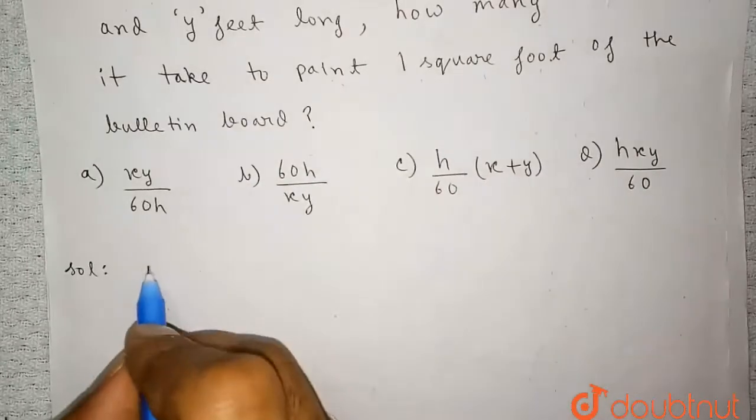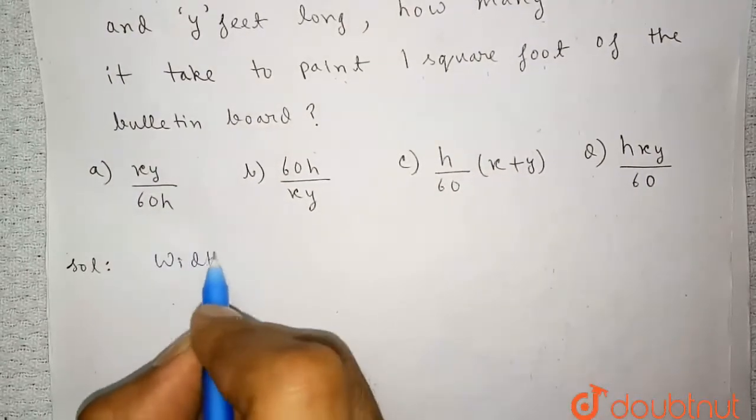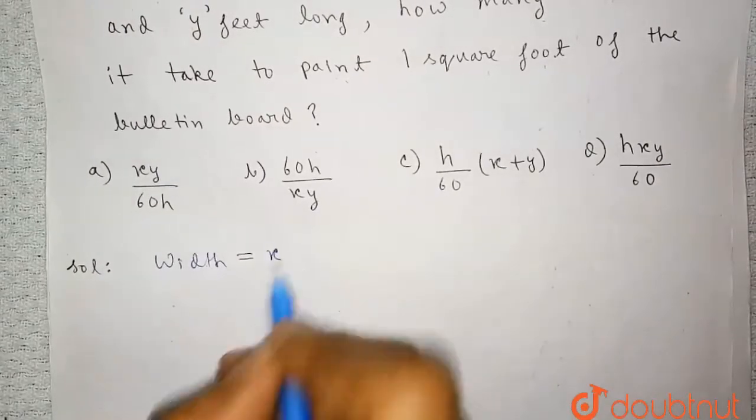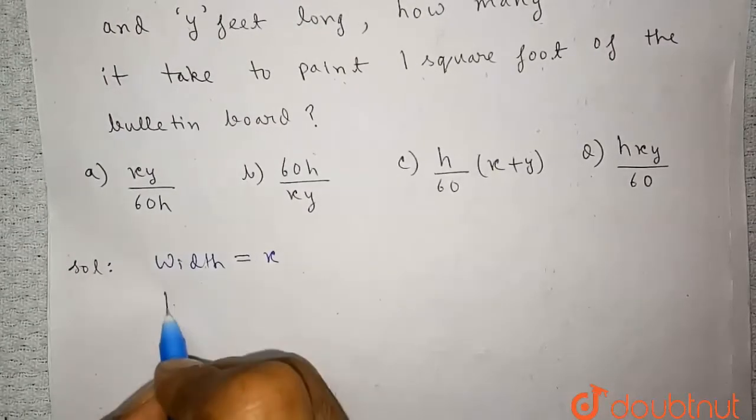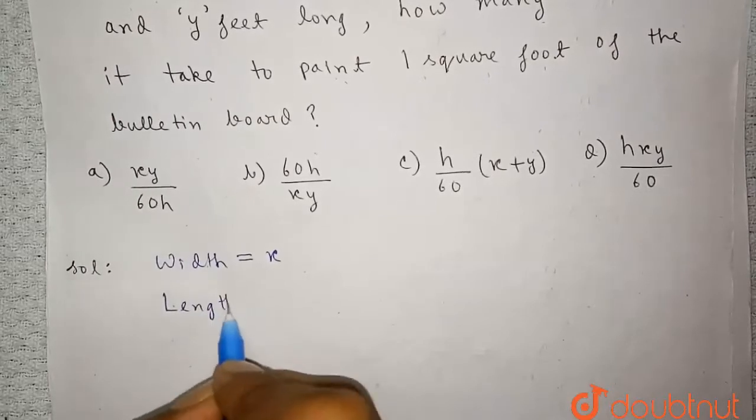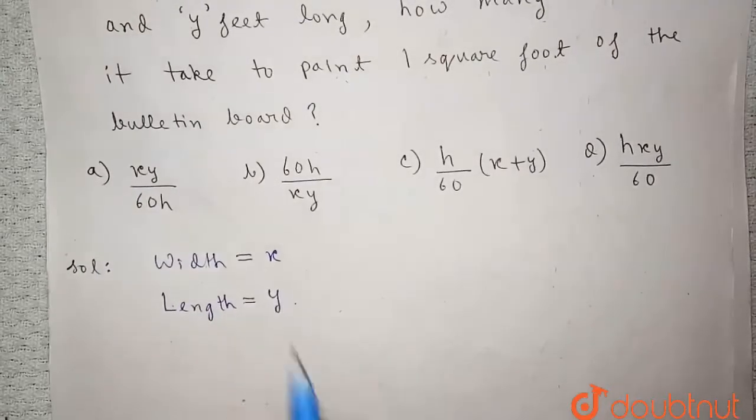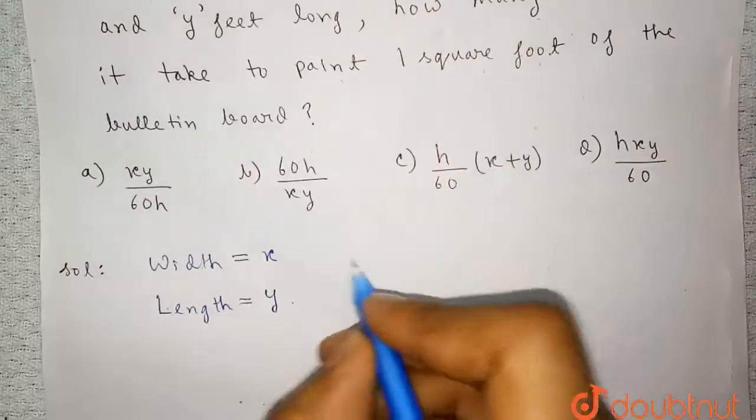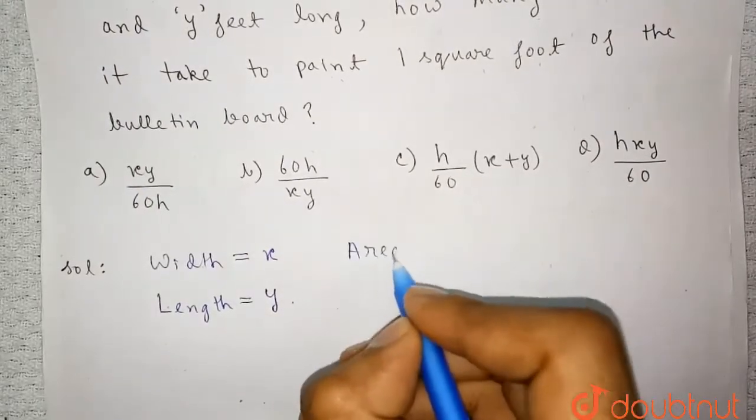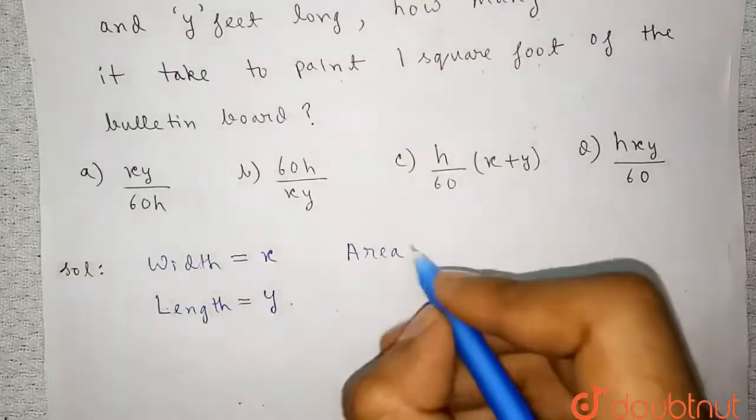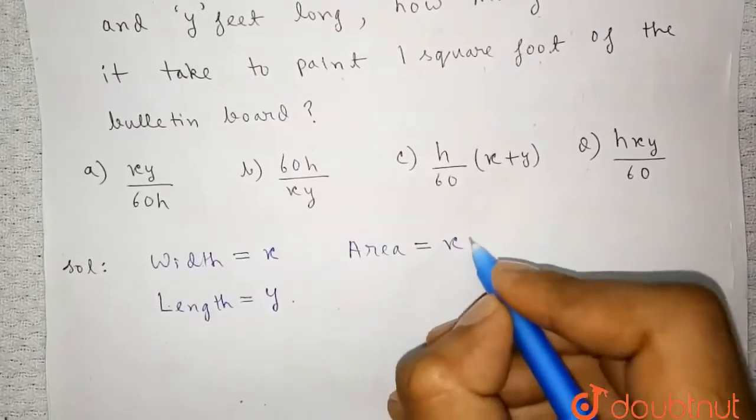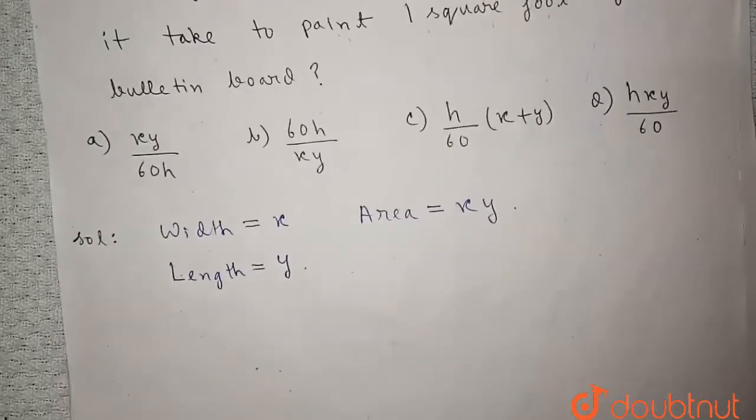The width is given here as X and length is given as Y. And we know the area, area is length into width. So the area is XY and it takes H hours.